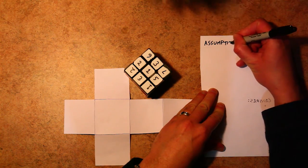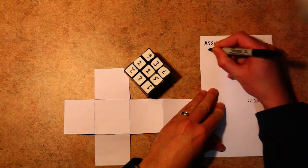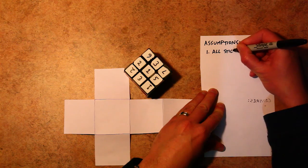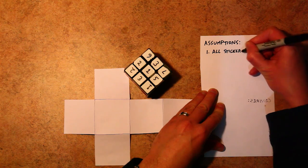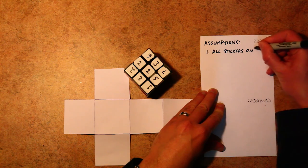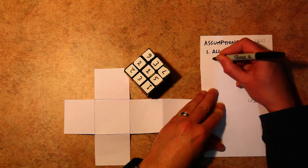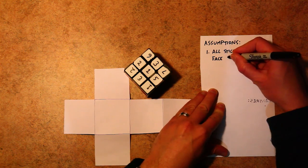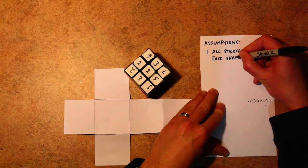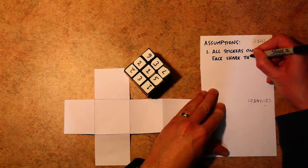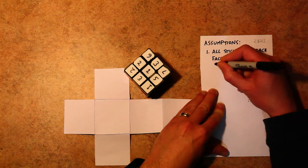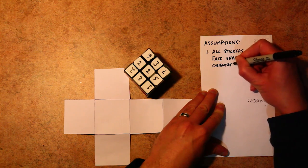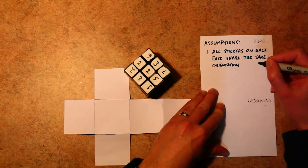We're going to start with some assumptions. Most cubes that I've seen, all the stickers on each face share the same orientation. So that makes it a lot easier to solve the cube rather than just going by the numbers alone. If your toy maker is sadistic and has decided to make random orientations for all the stickers, then this technique will not work, and it's going to be a much harder problem.